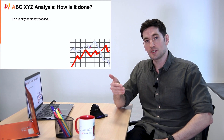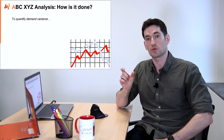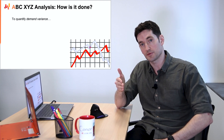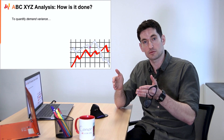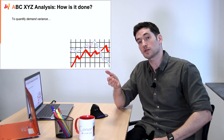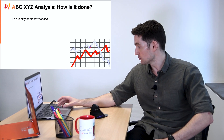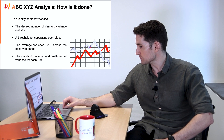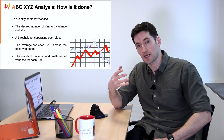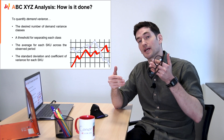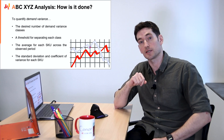ABC XYZ analysis aims to identify demand variance for each SKU across the observed period. In other words, were sales for each SKU static or did they fluctuate? If they fluctuated, how intensely? To calculate this, one needs the following details. Once we have these, we can merge the ABC categories, which reflect revenue, with the XYZ ones, which reflect demand variance. Let's look at an example.